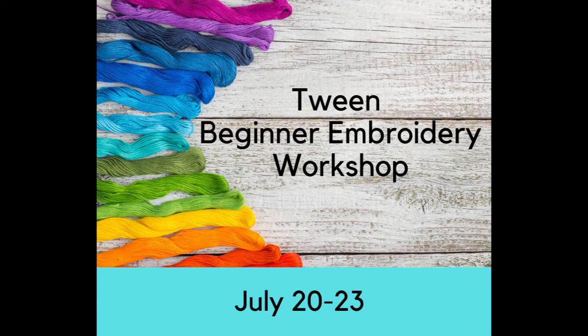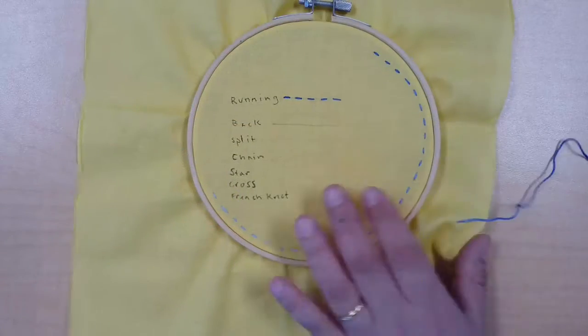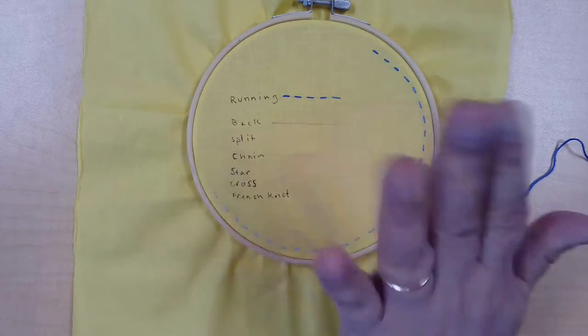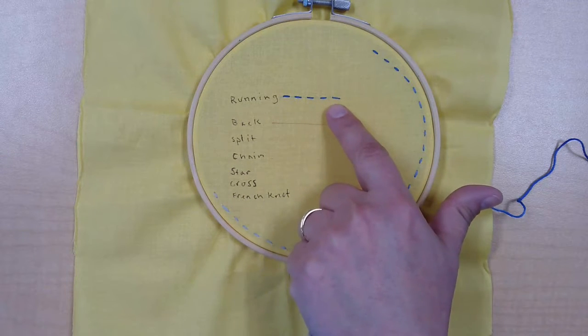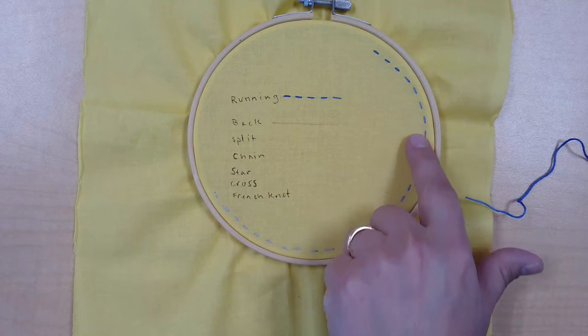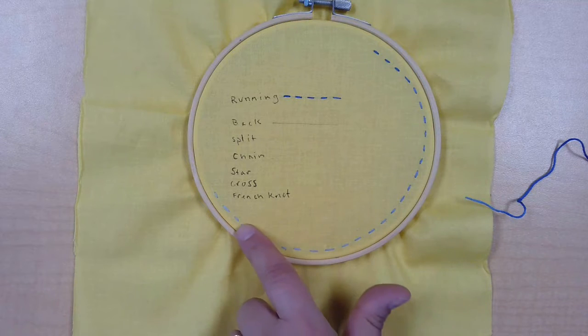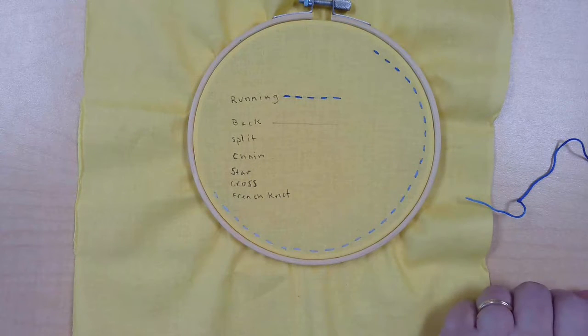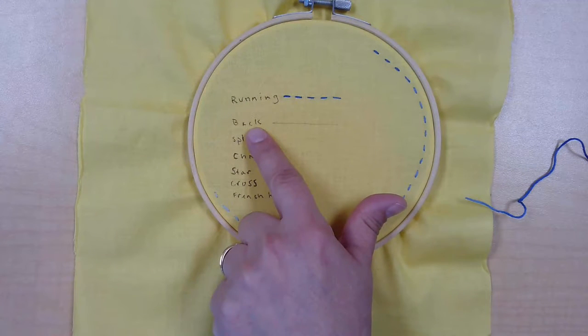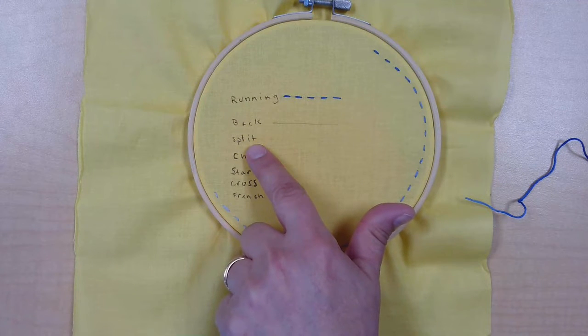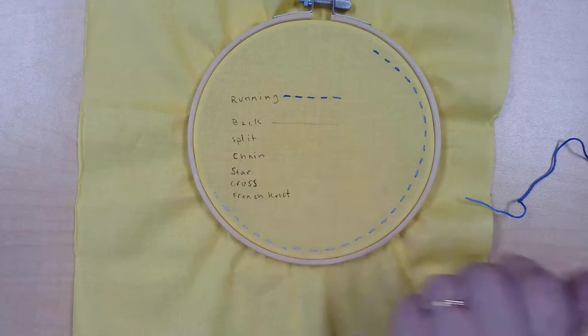Tween beginner embroidery workshop video 2. Hi tweens, we're back. Last session we worked on the running stitch, which is a very basic stitch, and practiced doing some of that around our hoop. Today we're going to learn three stitches: the back stitch, the split stitch, and the chain stitch.